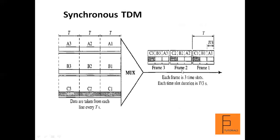In synchronous time division multiplexing there are three input lines: line A, line B, and line C. The data from line A is divided into units A1, A2, A3; from line B into B1, B2, B3; and from line C into C1, C2, C3. Each slot has a duration of T time units, so data is taken from each line every T seconds.